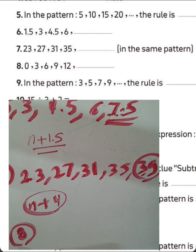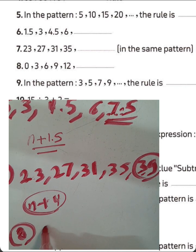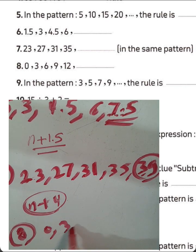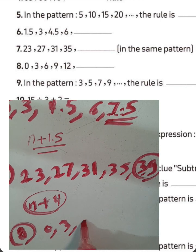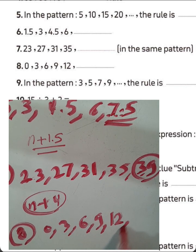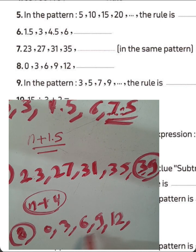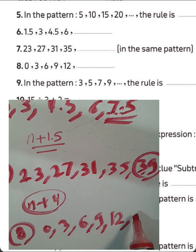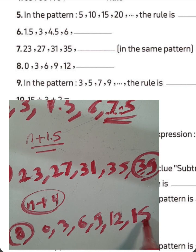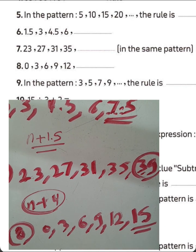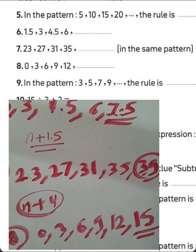Question number 8: 0, 3, 6, 9, 12. It increases by 3 each time. So the next number will be 15. Write 15 in the space.